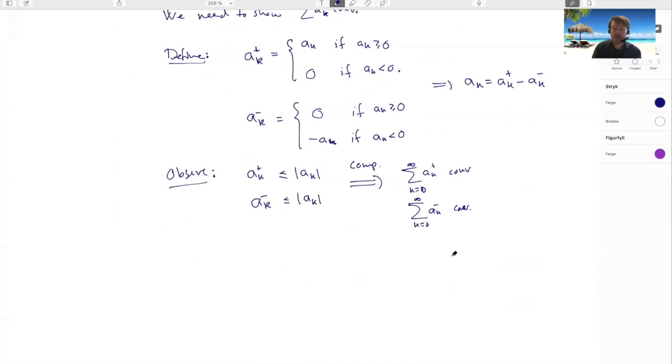Why do we care about this? Well, if I have two convergent series, I can look at their difference. It will also converge. So just this number minus this number here.